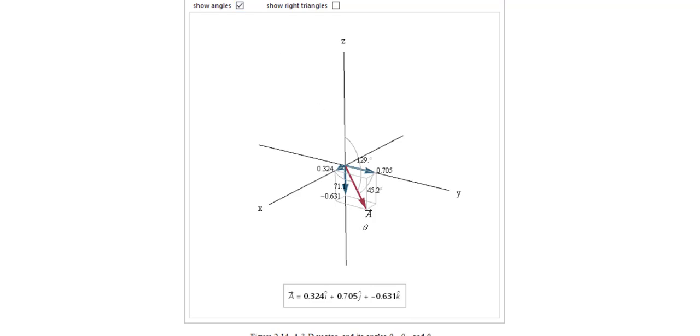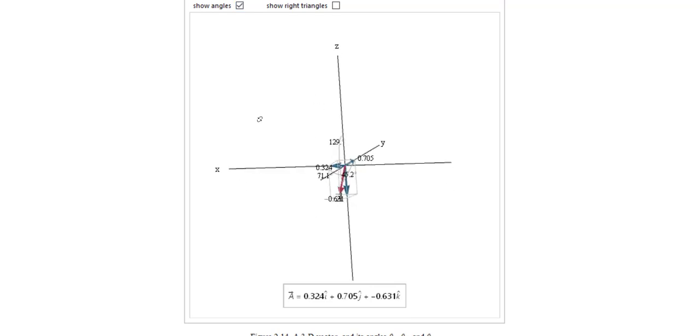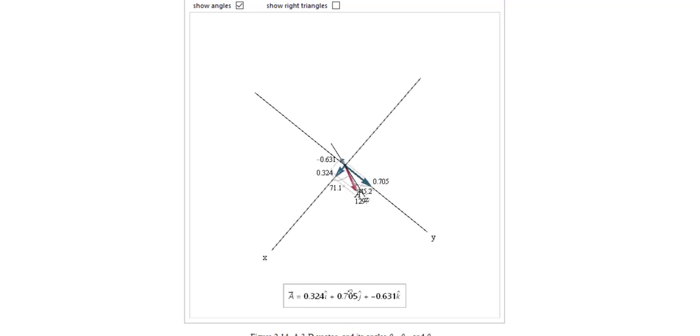And I can turn on the angles and view those angles for alpha, beta, and gamma. Alpha is measured from the x-axis. So if I look down the z-axis, I can see it. And 71.1 degrees is what we got.